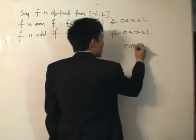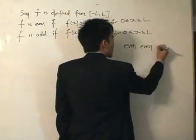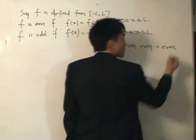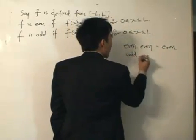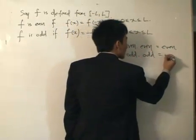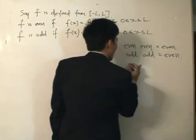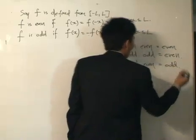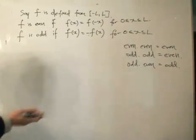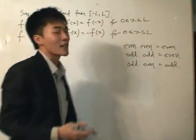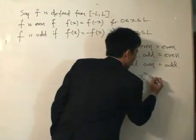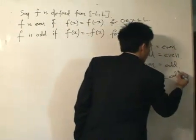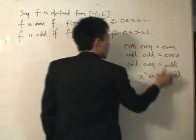We also need to understand the multiplication of even and odd functions. An even function multiplied by an even function gives an even result. An odd function multiplied by an odd function gives an even result. An odd function multiplied by an even function gives an odd result — simply think of odd as negative and even as positive to see this relationship. So a function like x squared times sine x would give an odd function, because odd multiplied by even gives odd.